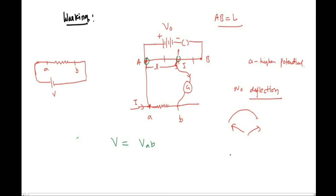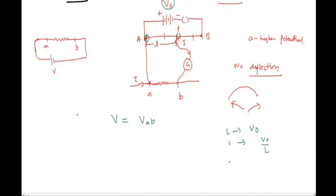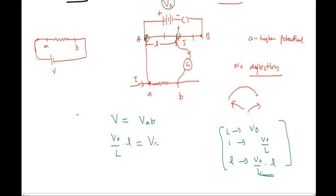To find the potential between point A and P, which is V: the potential of the whole wire length L is V naught. So for unit length the potential is V naught divided by L. For length l the potential will be V naught divided by L, multiplied by l. So V equals (V naught / L) × l, which equals V_AB. This is the potential across points A and B.